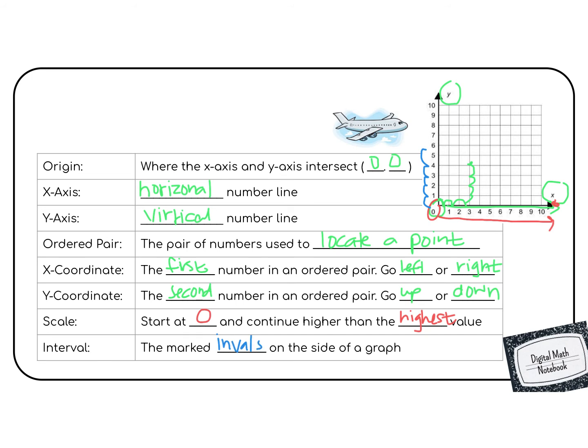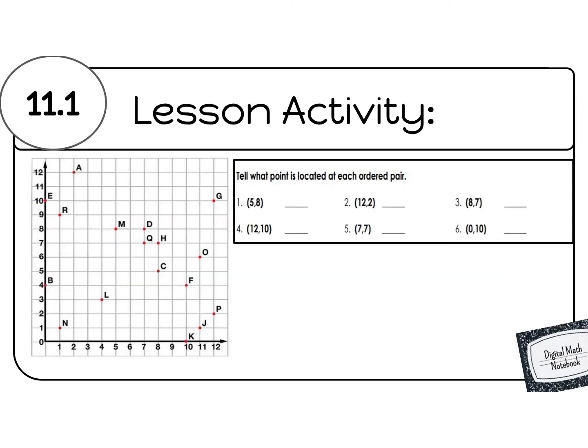Let's try plotting some points together. It's time for the lesson activity. In this lesson activity, we are going to look at this coordinate grid on the left and see what is located at that ordered pair. We're going to practice starting at the origin, going down the runway first, like in our airplane, and then rising up. Our first point is 5, 8. So we're going to start at 0, and we're going to go down the runway 5: 1, 2, 3, 4, 5. And then our next number is 8. So we're going to go up all the way to the 8, which you can see is the letter.